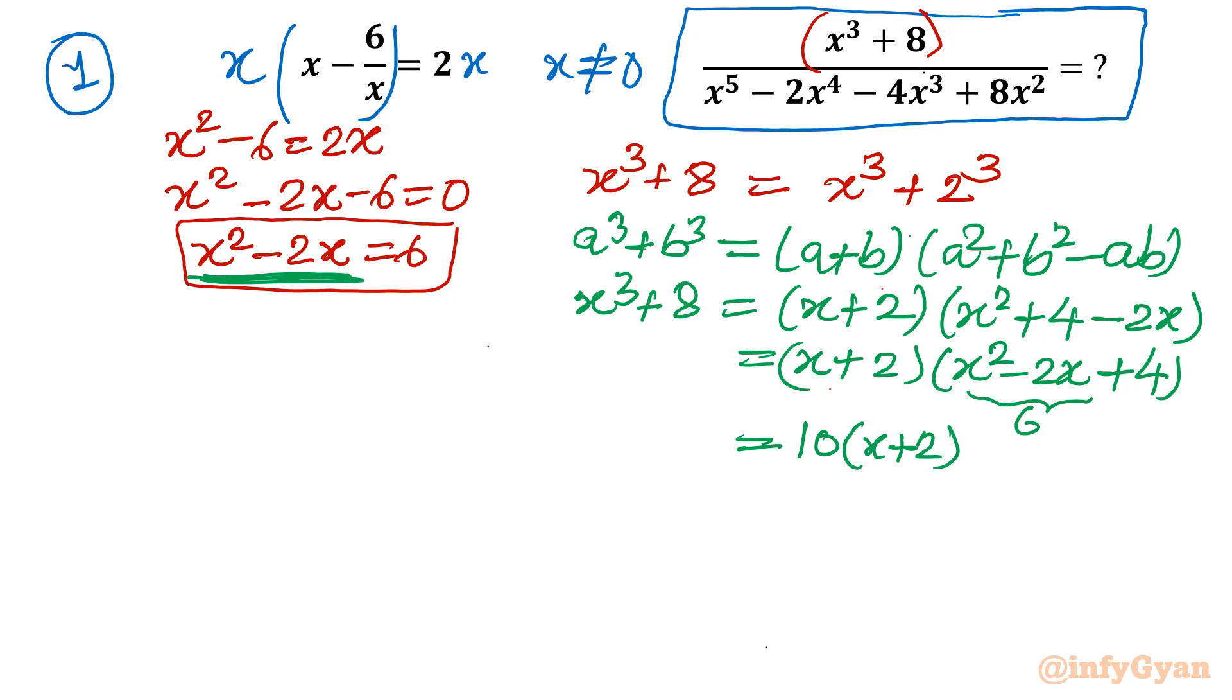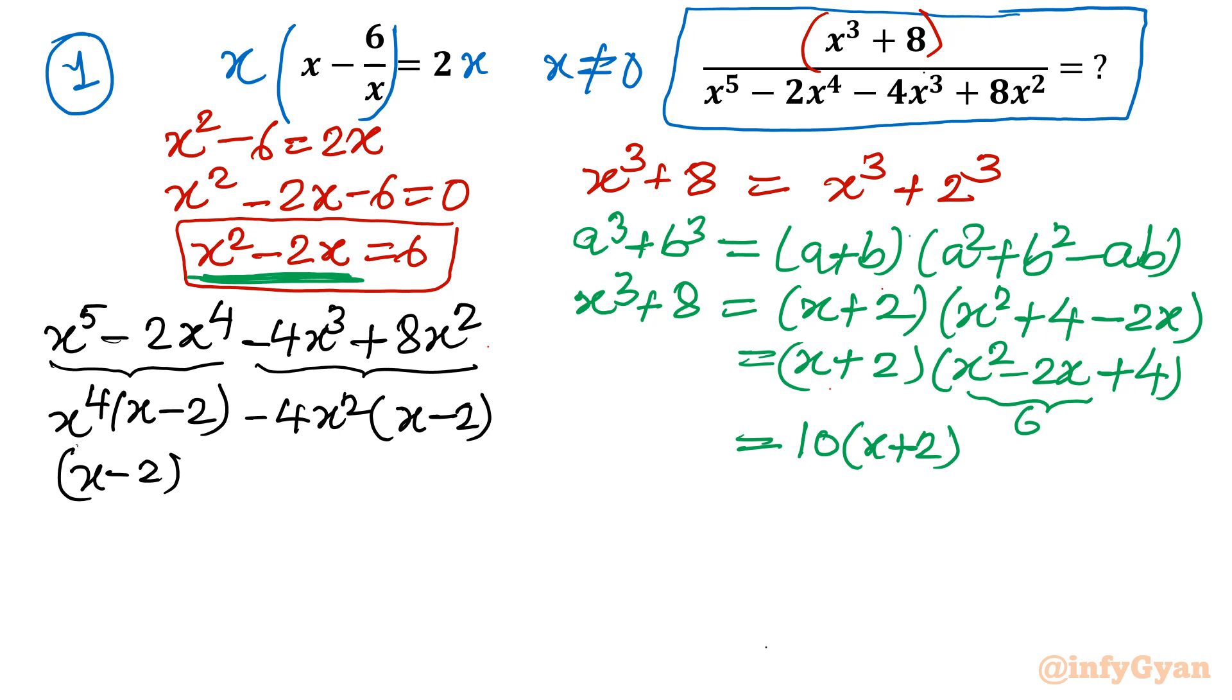Now come to our denominator. Our denominator is x power 5 minus 2x4 minus 4x cube plus 8x square. Now I can see from first two terms it is x power 4 common. So let us take x power 4 common. It would be left in the bracket x minus 2. Now from the last two terms I can consider minus 4x square common. So it will be left with x minus 2 once again. Overall x minus 2 is common out. We will take out x minus 2 common. So what will be left inside the bracket? That would be x power 4 minus 4x square.